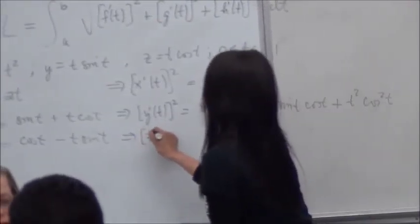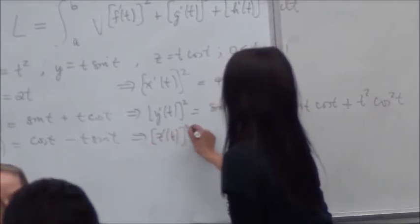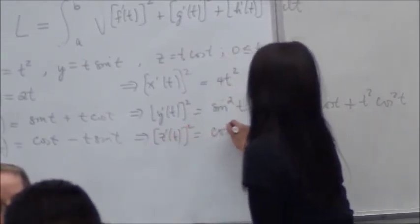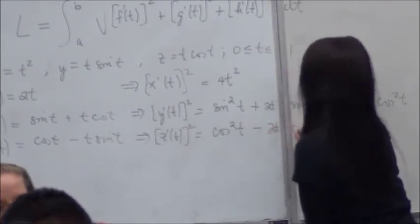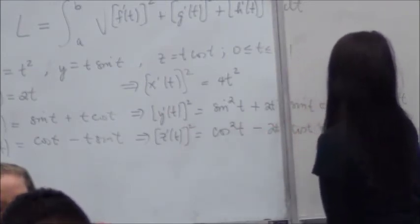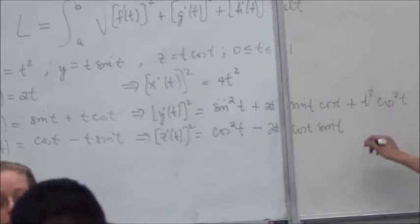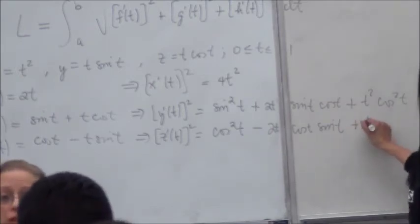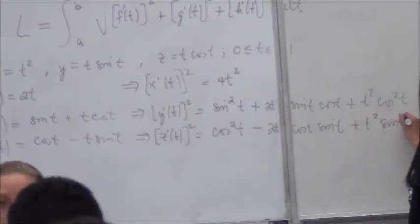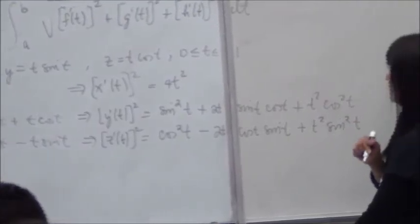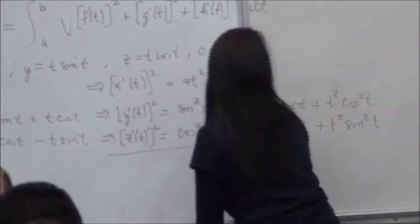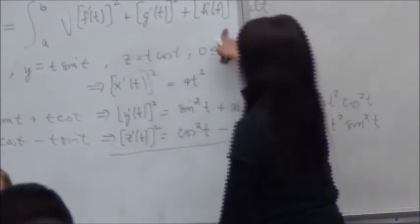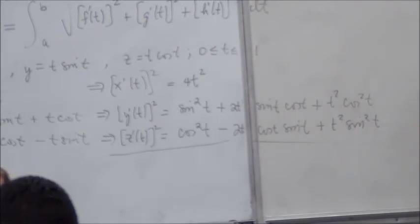And then if you have Z prime of T you square that you will get cosine squared T minus 2T cosine T sine T. I think I see it now why I did it this way. Do you guys see why I did it this way? Why did she write it vertically? Because then what do I want to do next with these? I want to add them up. Right? Isn't the formula add? Yes.